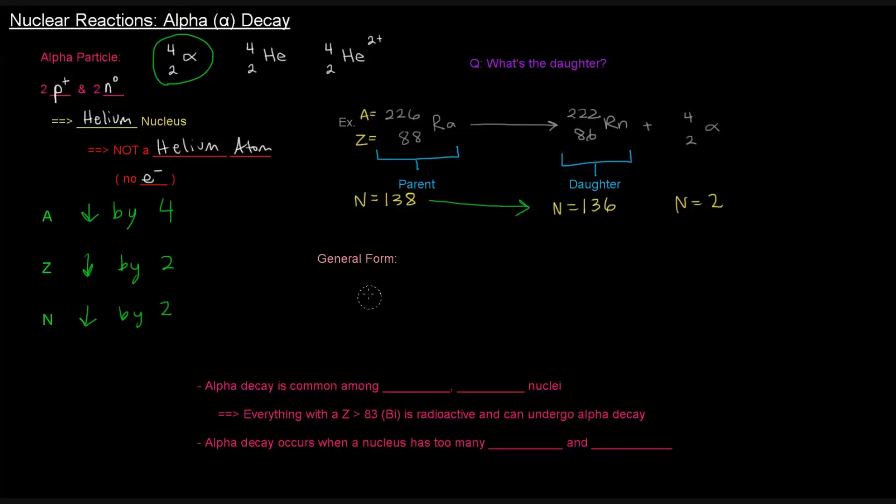The general form is often written like this. I don't know how often I see it, but the general form can be written like this, where, basically, if you start with some parent, the daughter will look like this. The mass number will decrease by 4, the atomic number will decrease by 2. That is the general form here.